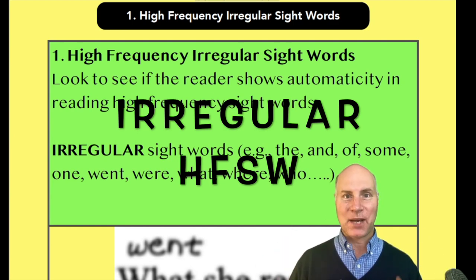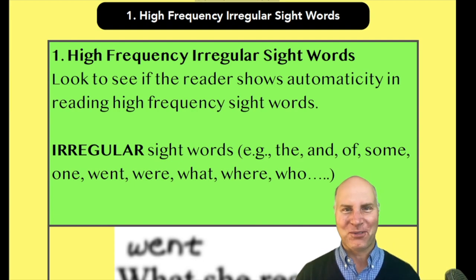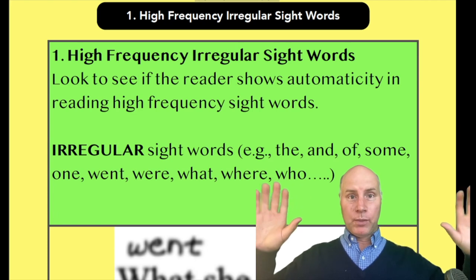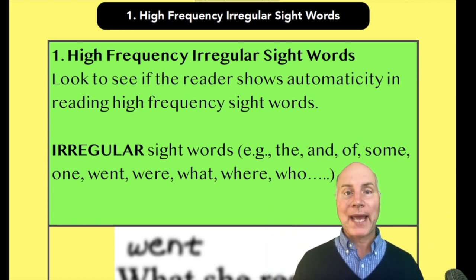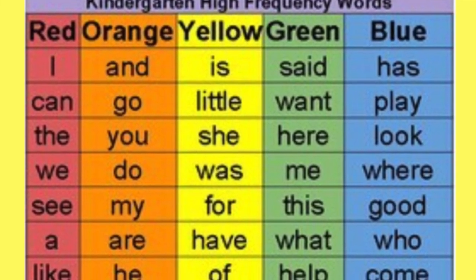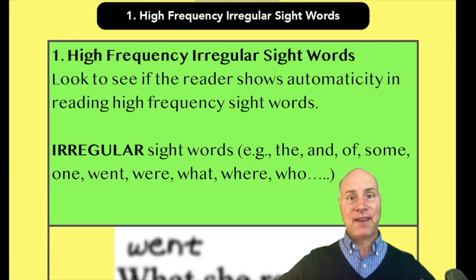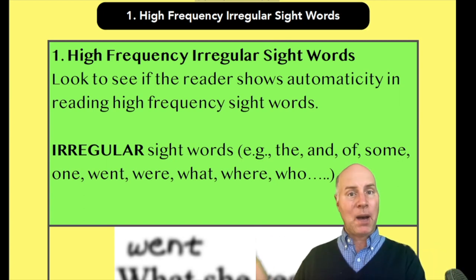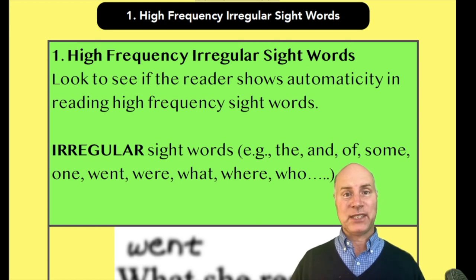High-frequency irregular sight word vocabulary — that's a long phrase with a lot of parts to it. The first part is high-frequency words. Those are the words that we want students to rapidly recognize as they read — words we want them to spot without going through the decoding process. We want them to have automaticity with these high-frequency words. Sometimes they're called sight words, sometimes pop words.